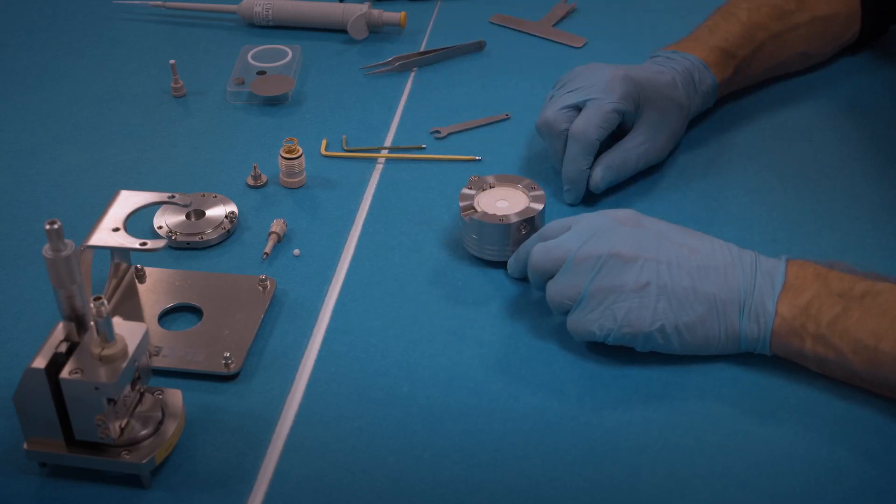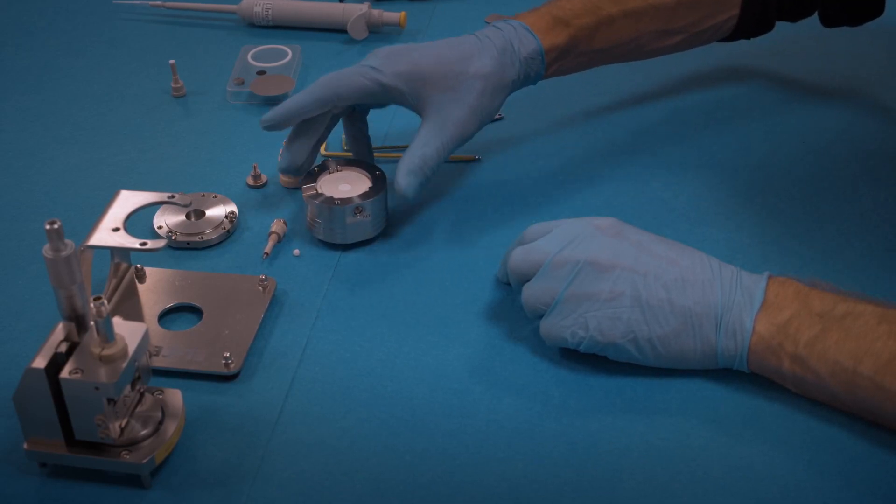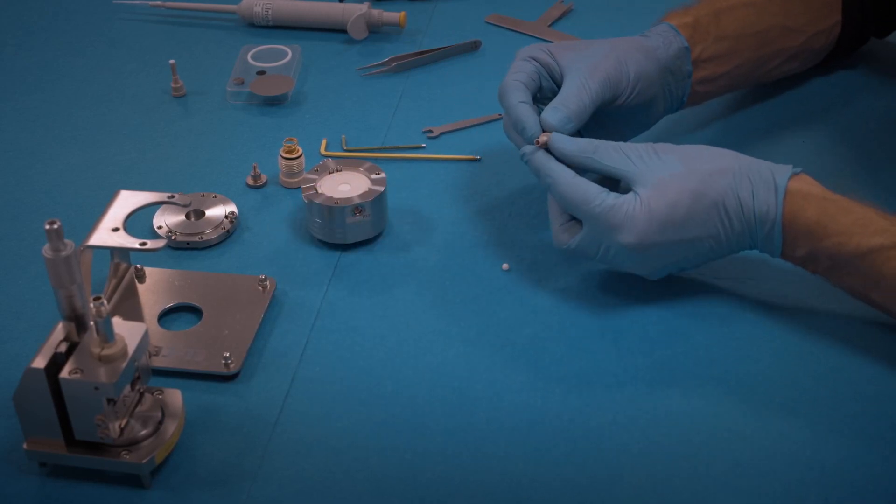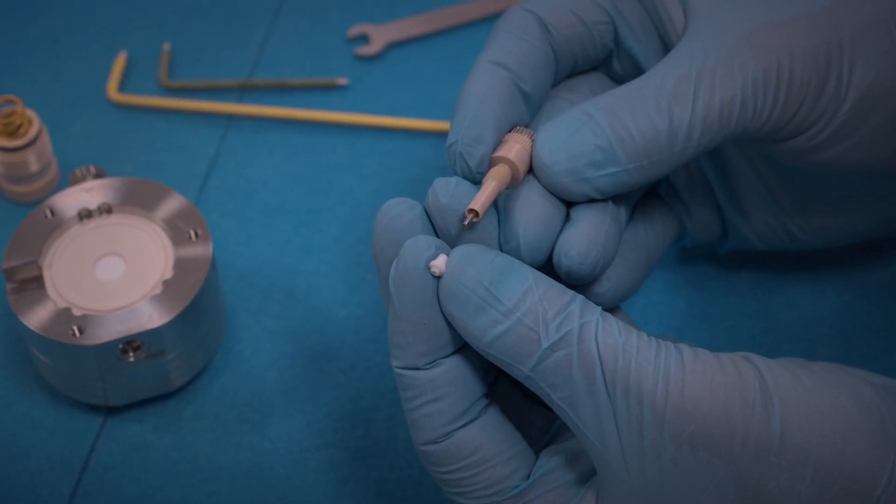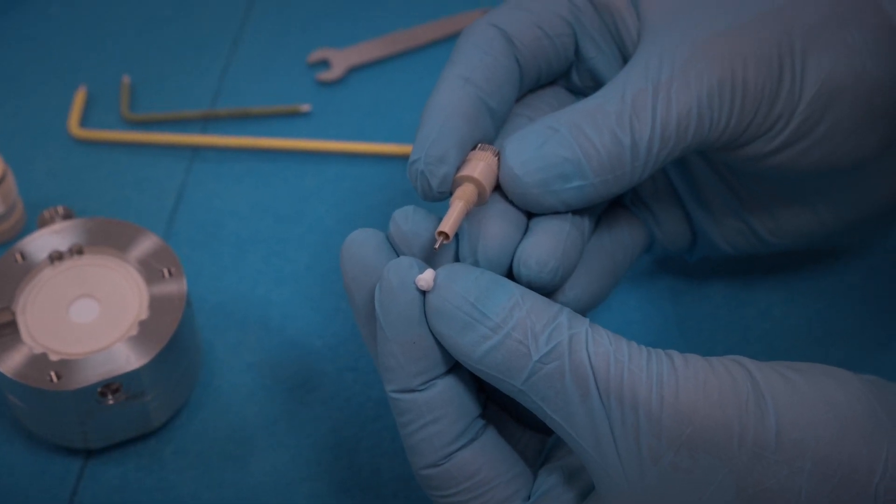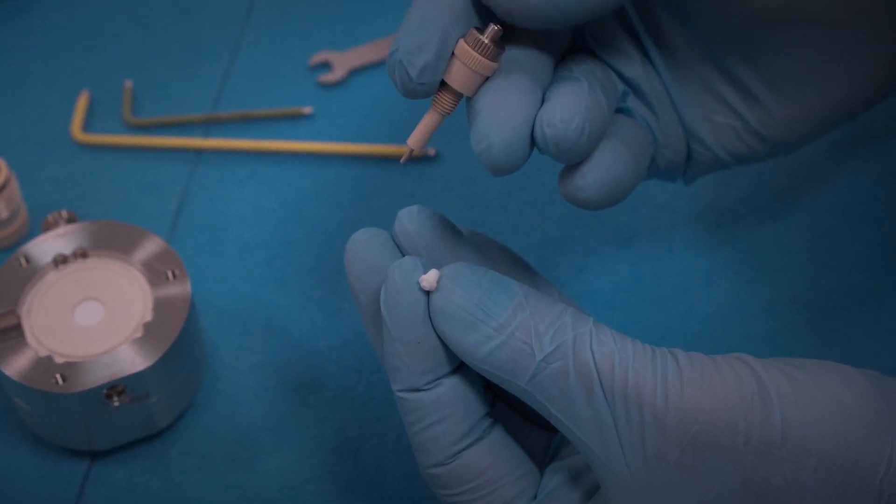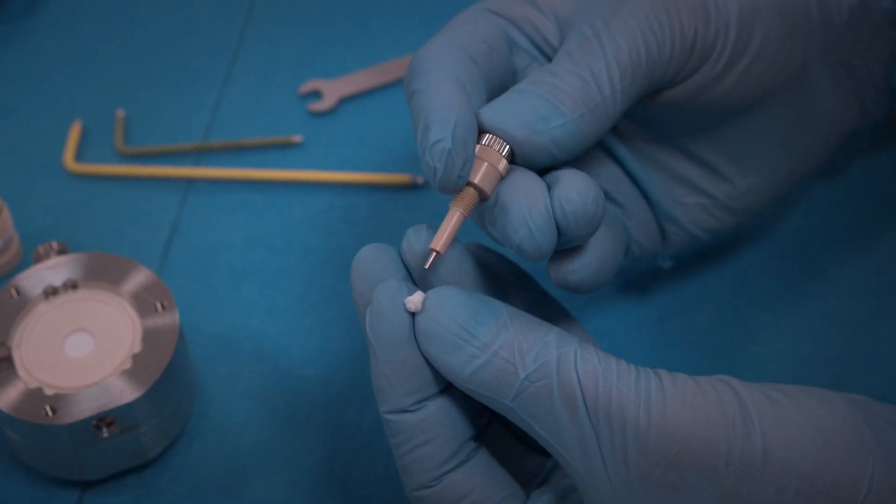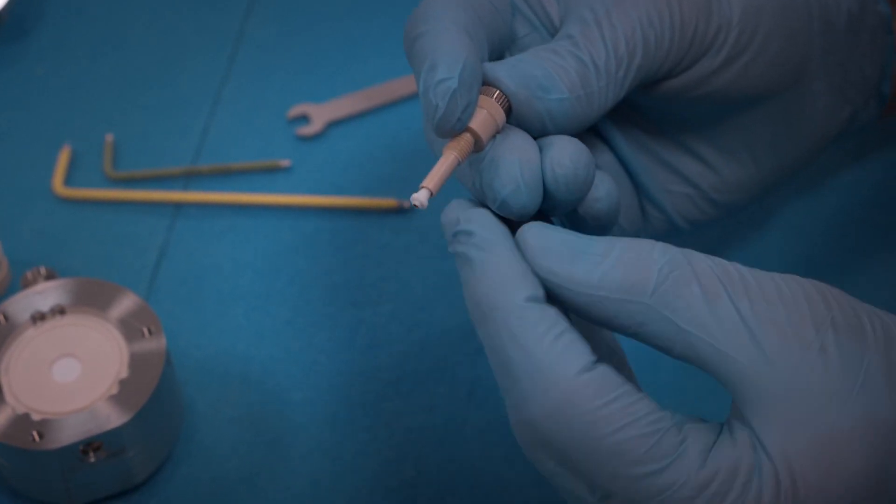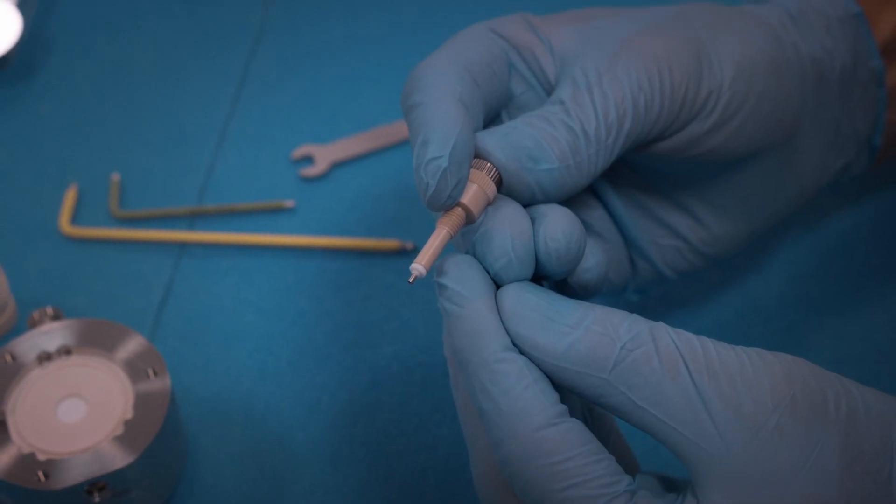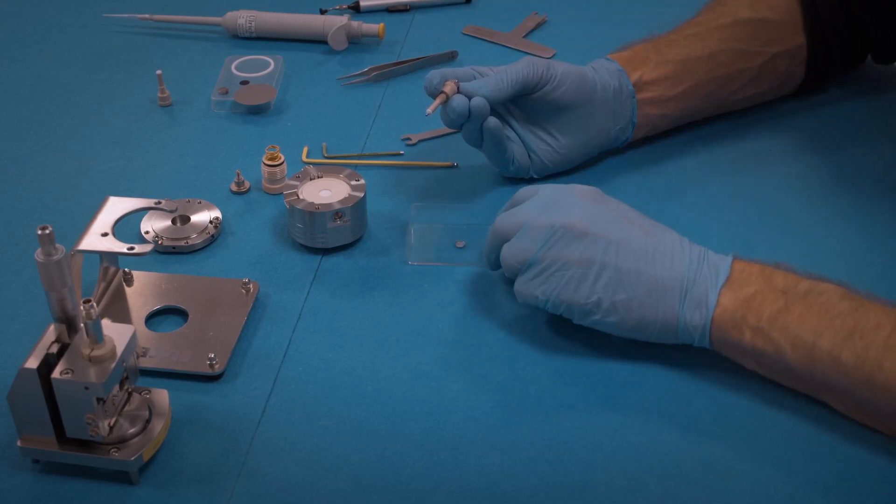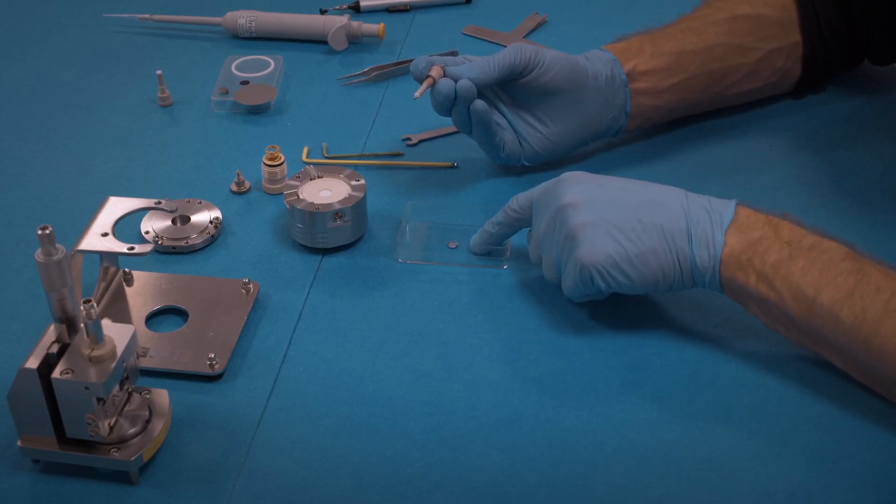We assemble the reference pin. We push this PTFE ferrule onto the pin, and while we do this we press onto this button on the other end of the reference pin. This is to make sure that the ferrule is really here in the uppermost position.